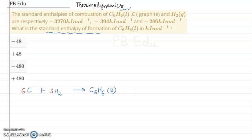Now we have the formation reaction and we need to calculate its enthalpy. We are given the enthalpies of combustion — reactions with oxygen — for C6H6, carbon, and H2. We will write all three combustion reactions and manipulate them to obtain the required formation reaction.